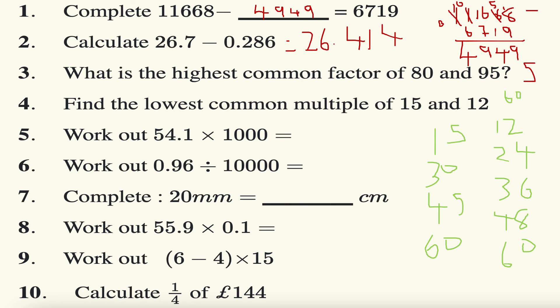Next question: work out 54.1 times a thousand. Well, 54.1 times 10 is 541, and then adding on two more zeros gives me that.